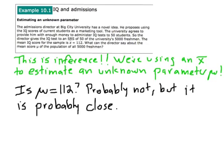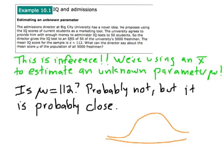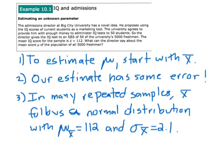This problem is really getting at the idea of inference — we're using an x-bar to estimate an unknown parameter mu. We don't know what mu is. Is mu 112? Probably not exactly. Our x-bar was 112, but it's probably pretty close to 112. When you think about the ideas from last chapter, we can actually think about, based on our normal curve, how likely it is that mu is pretty close to 112. To estimate mu, let's start with x-bar. We don't know what mu is, but it's likely pretty close to x-bar, so let's use that as a starting point.